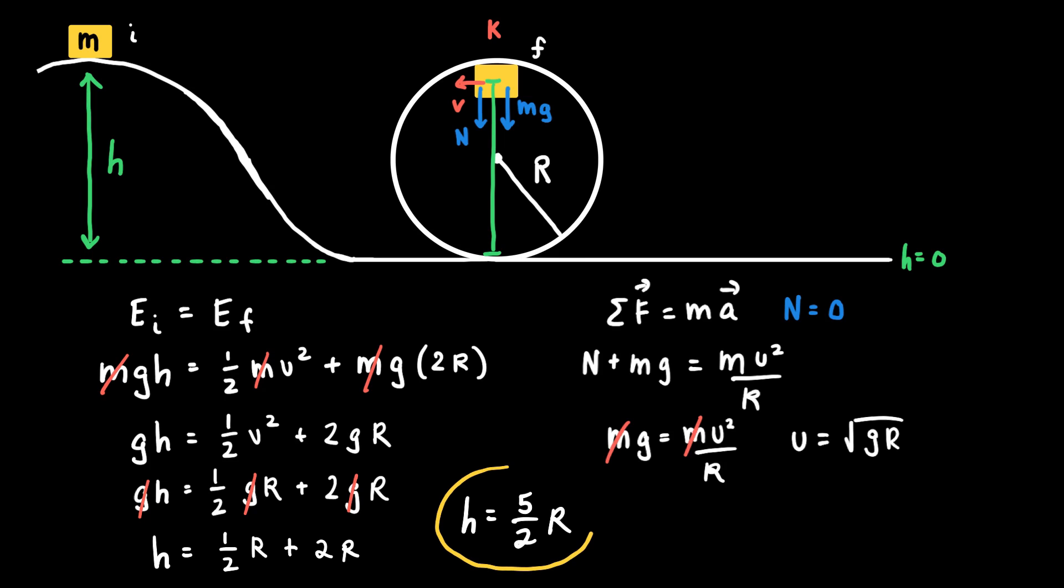And the reason why this relationship is important is because it tells us that in order to have the minimum speed to safely go around the loop, the initial height, which determines the speed that it'll have there, has to be equal to five-halves of the radius of the loop. And so the picture that I've drawn is clearly not to scale, because the height that the cart has to have has to be two-and-a-half times greater than the radius of the loop, which doesn't appear to be true.